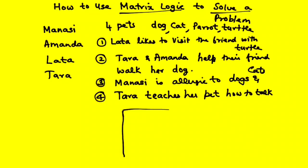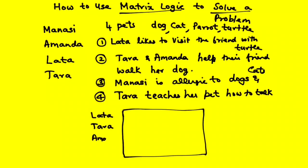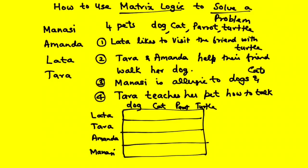We're going to make a matrix grid like this. I'm going to put Latha, Tara, Amanda, and Manasi as the rows. And here I'm going to put the pets: dog, cat, parrot, and turtle as the columns. We make small grids — it's like a matrix with rows and columns. Based on the information, we're going to put dots or crosses. This is a four by four matrix.